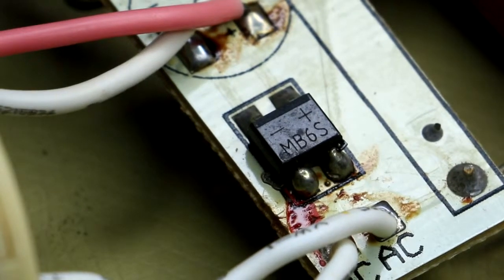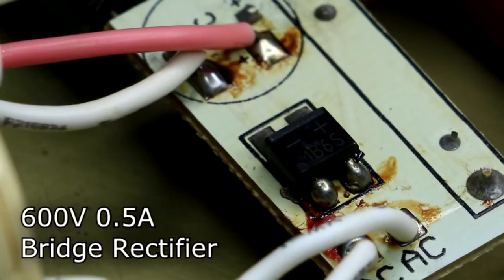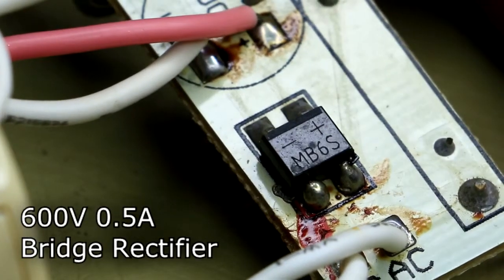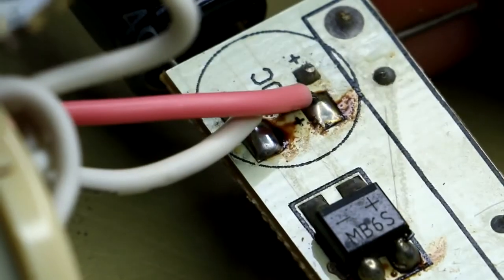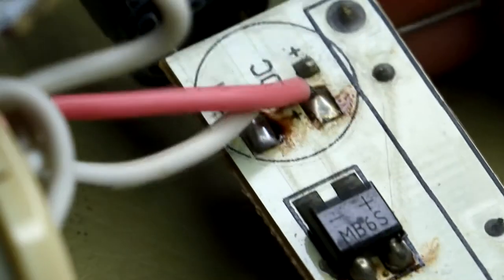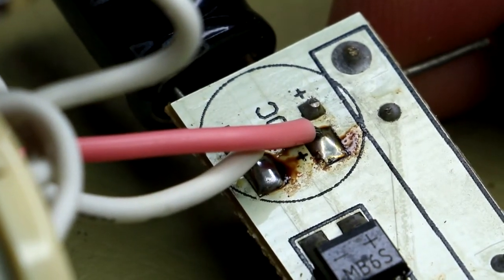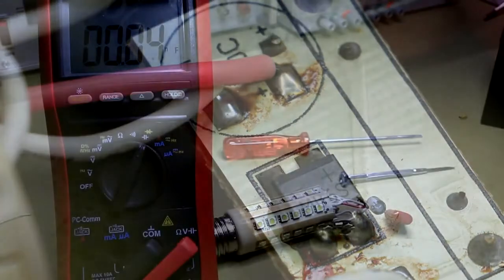MB6S, and that is simply a full wave rectifier. So it rectifies the 220 volts coming into the circuit, converts it to DC and pushes out to the LEDs. So quite likely these LEDs are all in series.